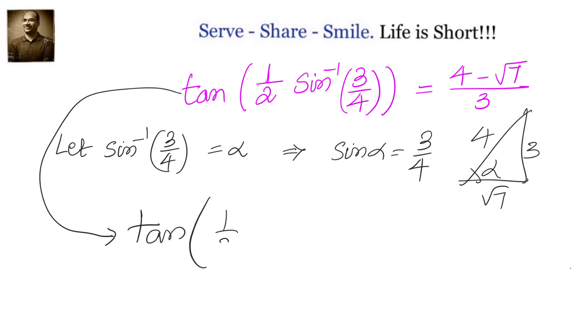When we substitute sin inverse three-fourths equals alpha, the left-hand side becomes tan of alpha by two. What is tan of alpha by two in terms of cos alpha?